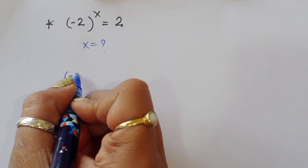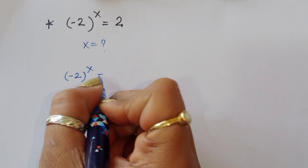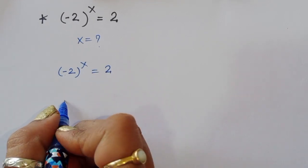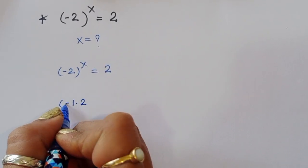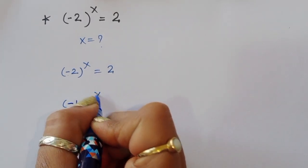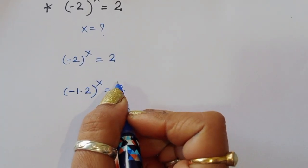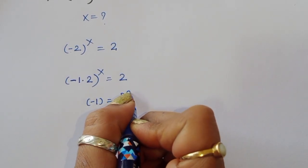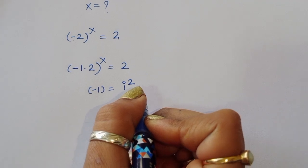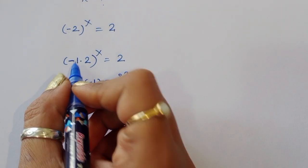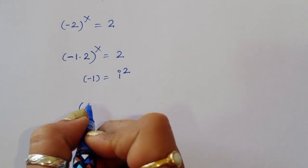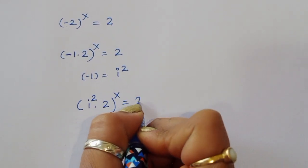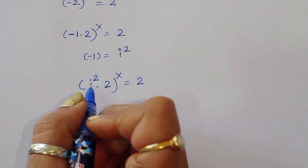(-2)^x = 2 is given. We can write -2 as -1 times 2, so (-1 × 2)^x = 2. Now, we know that -1 is equal to i², so we substitute i² here. We get i² times 2, which we write as (2i²)^x = 2.